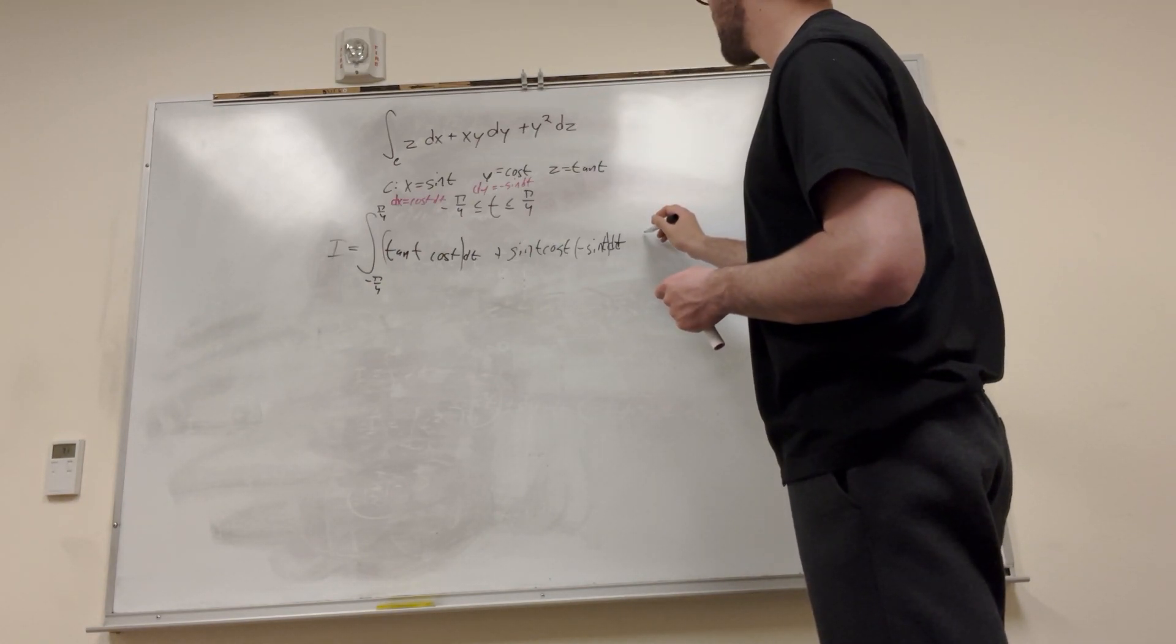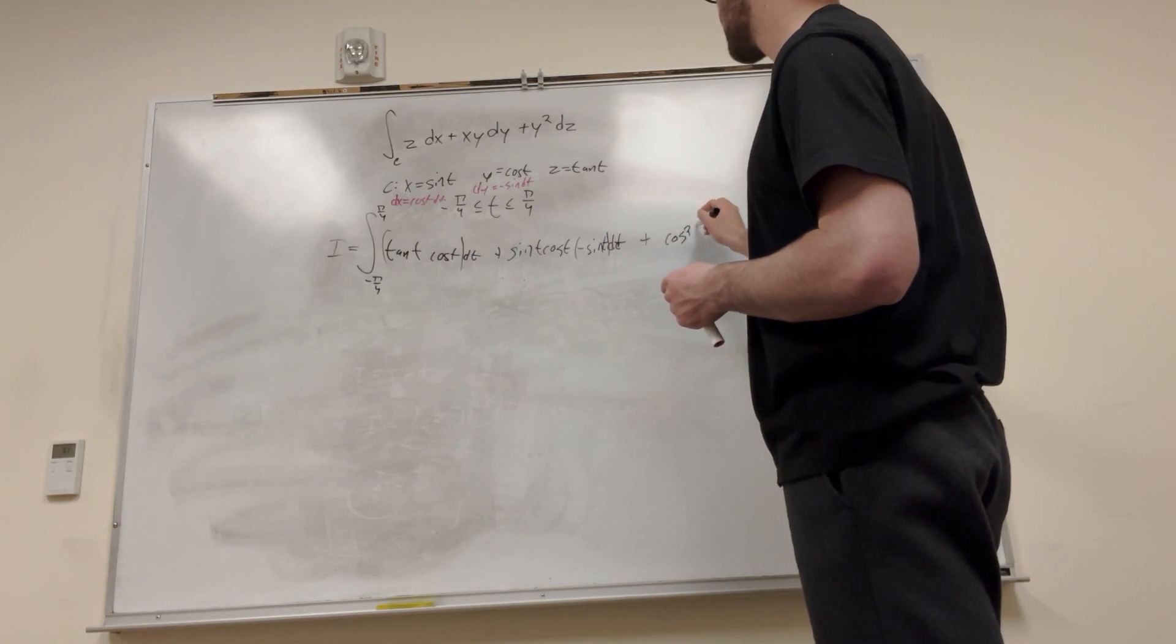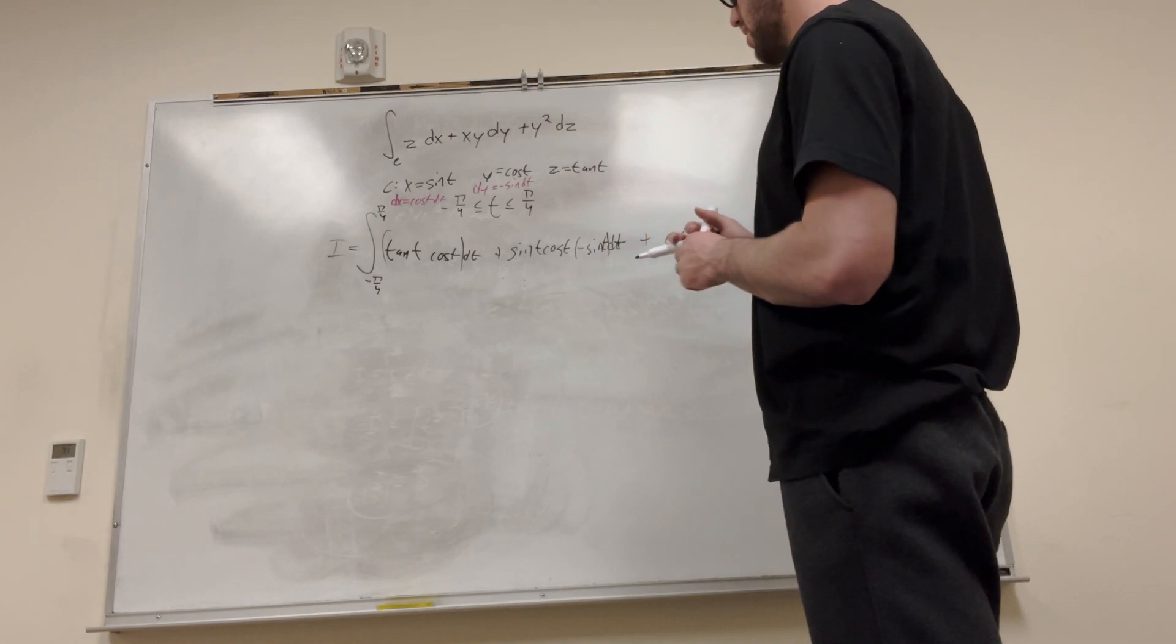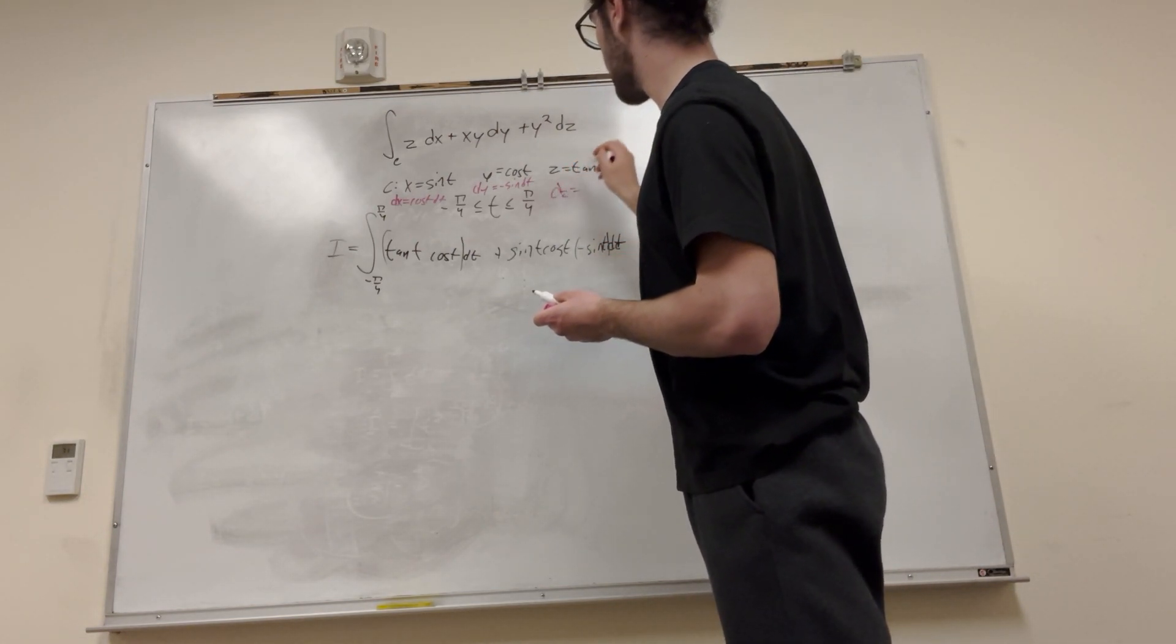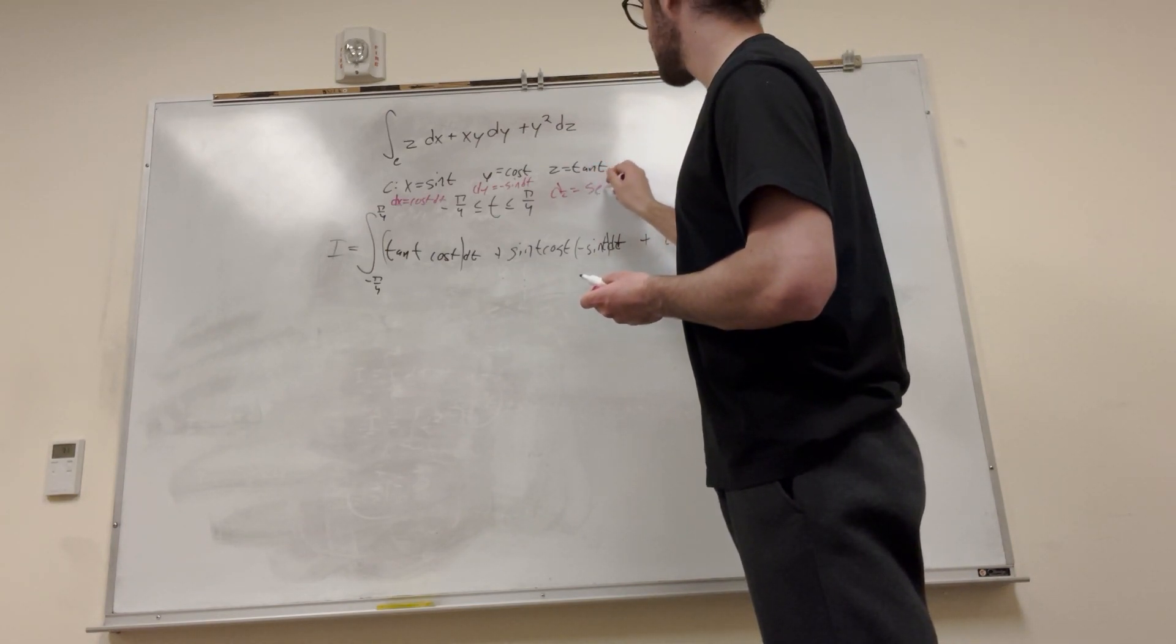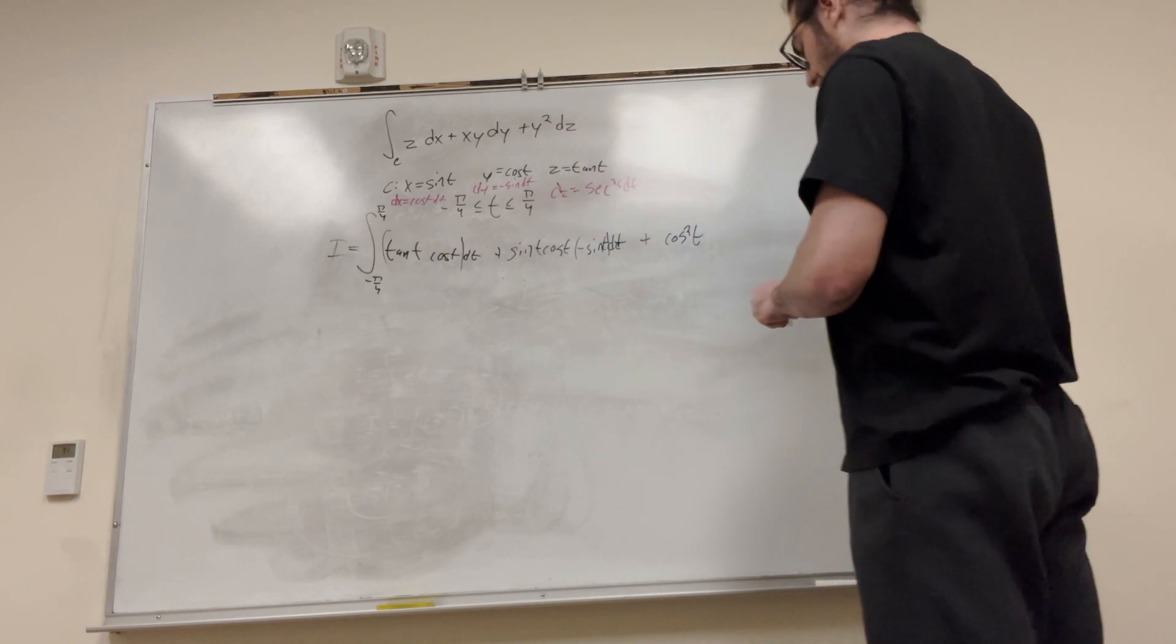All right, so y squared. So it's going to be plus. So it's going to be cosine squared dz. What is dz? It's the derivative of z. The derivative of tangent is secant squared. All right. Put that in there.